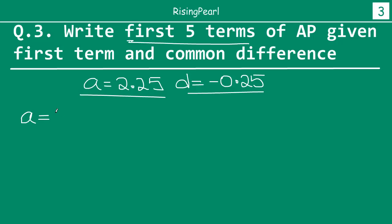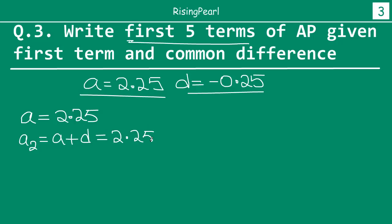First term is given as 2.25. So the second term will be first term plus common difference. So the first term is 2.25 and then we will add minus 0.25. So if we do that, 2.25 minus 0.25 will be 2.